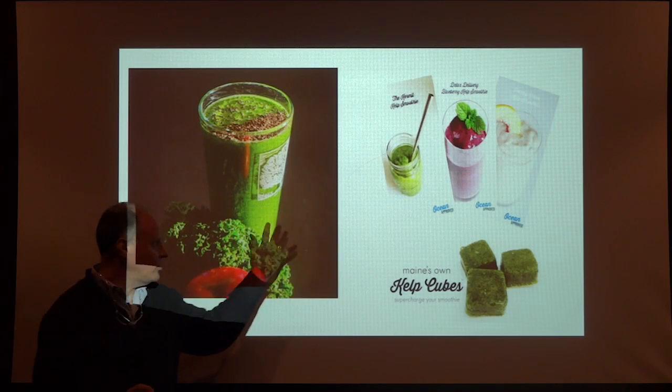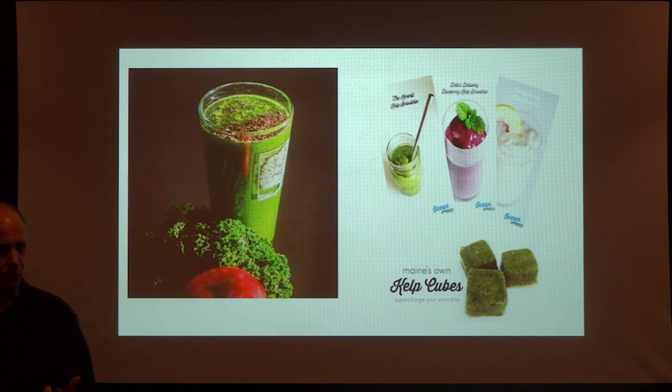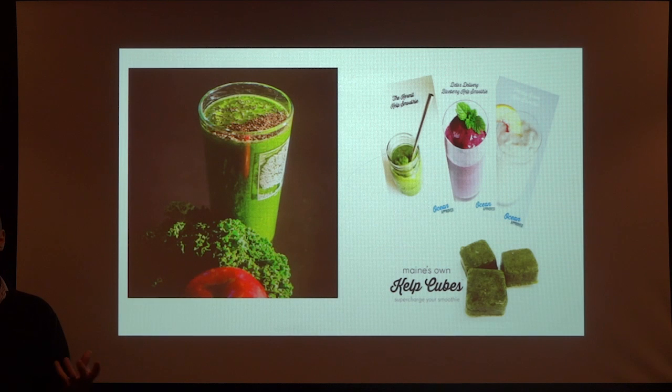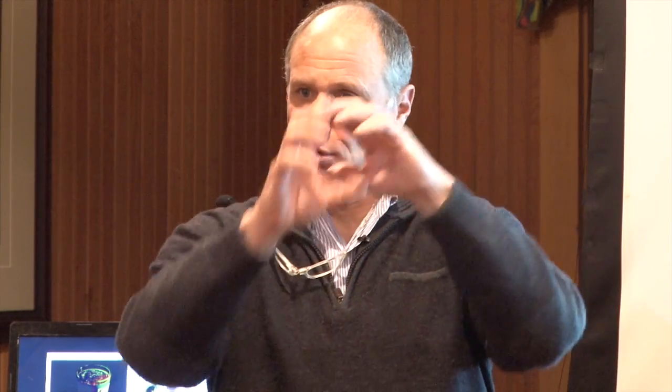We don't sell retail — we sell into institutions. One of our customer segments is the smoothie market. We have a product called the Smoothie Cube: kelp from our farm that's macerated and frozen into a half-ounce cube. It contains all the iodine you need for a day. Iodine is a very difficult nutrient to come across in our modern diet. In 1924 the US government realized the country was going iodine deficient. They went to the salt companies and said 'thou shalt iodize' — and that's how we ended up with iodized salt.